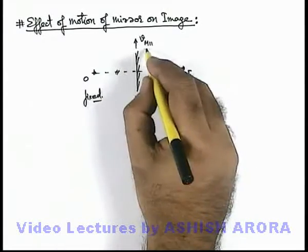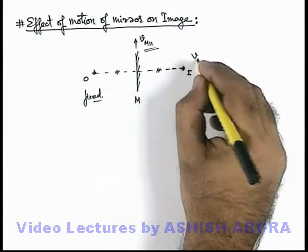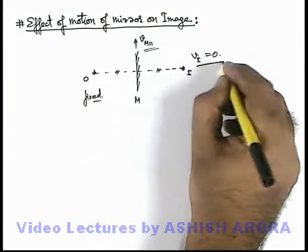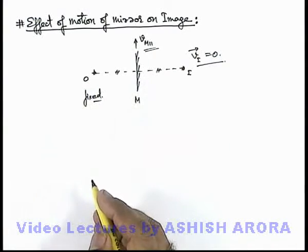So here we can see due to the mirror motion parallel to itself the velocity of image will always remain zero. There won't be any effect on image velocity as long as object is fixed.